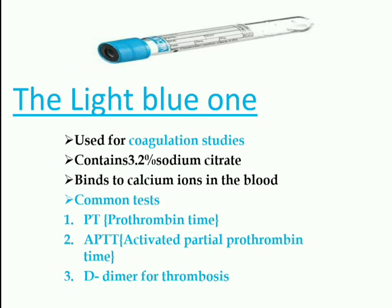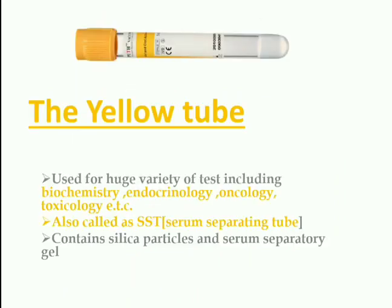Next, the light blue tube. It is used for coagulation studies and contains 3.2% sodium citrate. The ratio of blood to anticoagulant in this tube is 9:1. Sodium citrate binds to calcium ions in the blood. Common tests performed are PT (prothrombin time), APTT (activated partial thromboplastin time), and D-dimer for thrombosis.